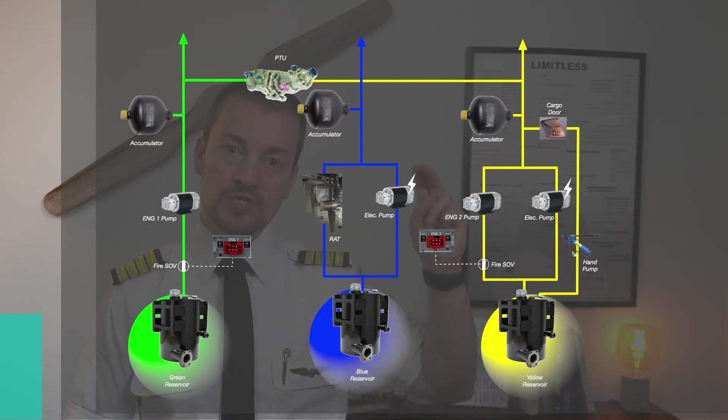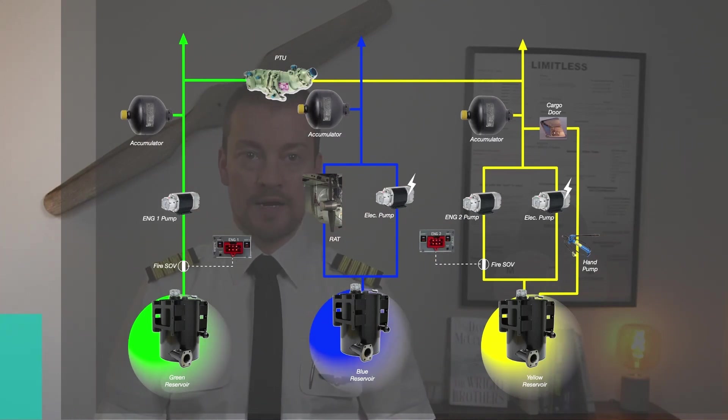The blue system uses an AC driven electrical pump and in case of an emergency, the ram air turbine.